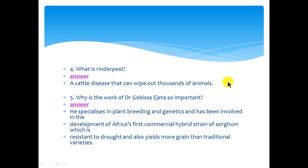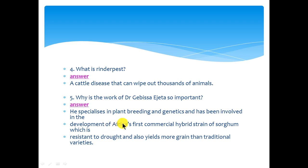Why is the work of Dr. Gabisa Edgeta so important? He specializes in animal breeding and genetics and has been involved in the development of Africa's first commercial hybrid strain of sorghum, which is resistant to drought and also yields more grain than traditional varieties.